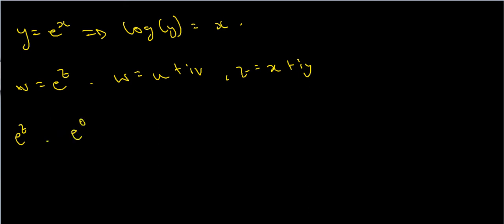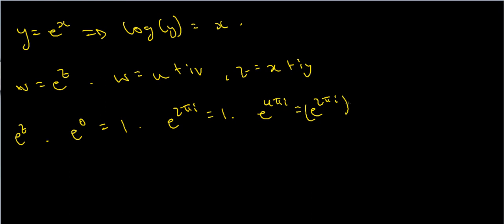We know that e to the 0 is just 1 — anything to the power of 0 is just 1. We also know that e to the 2πi is 1, and e to the 4πi is the same as e to the 2πi squared, which is 1 squared, which is 1. Likewise, e to the 6πi is 1, e to the 8πi is 1, e to the 10πi is 1, e to the minus 2πi is 1, and so on.